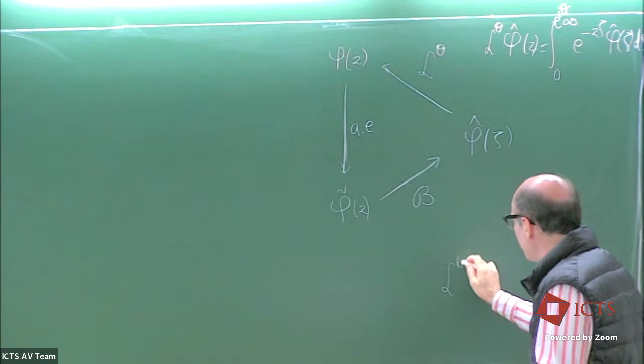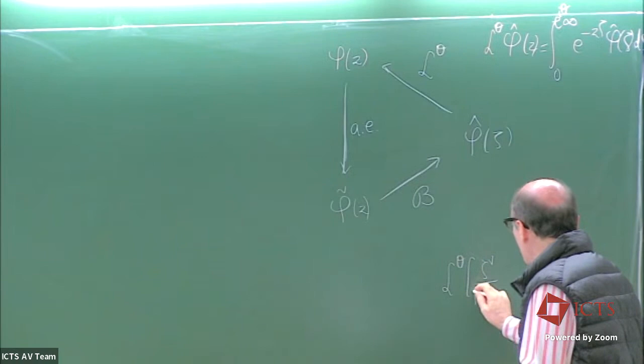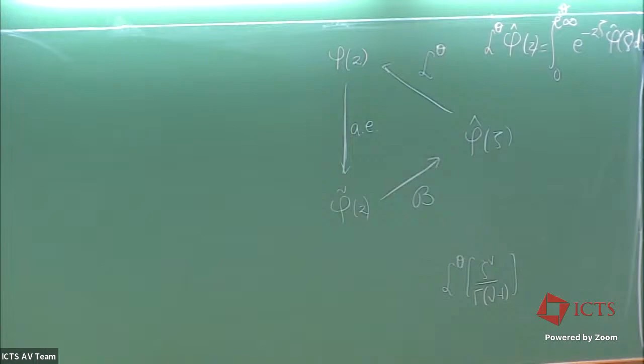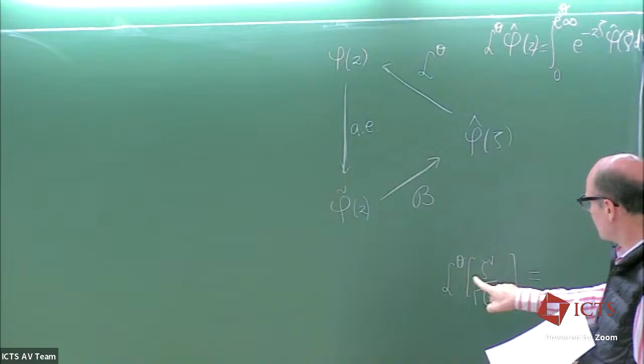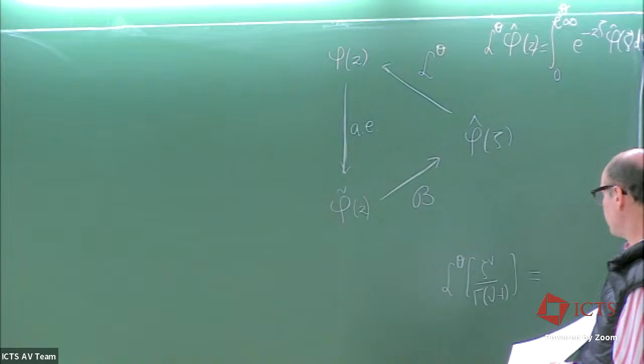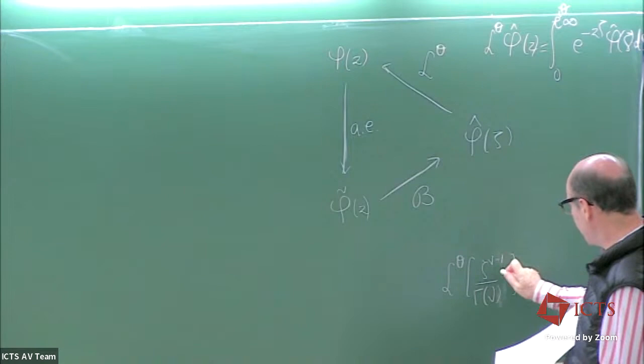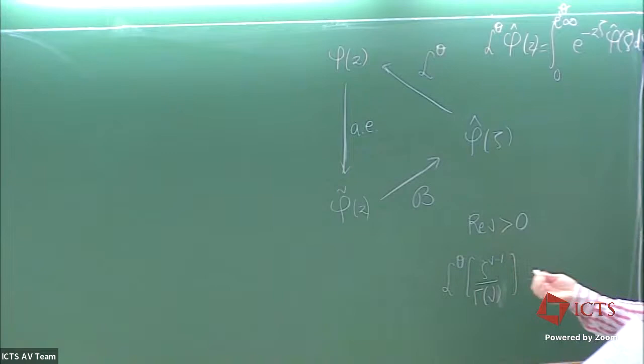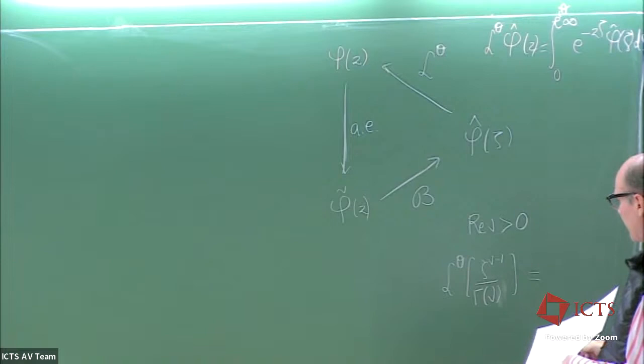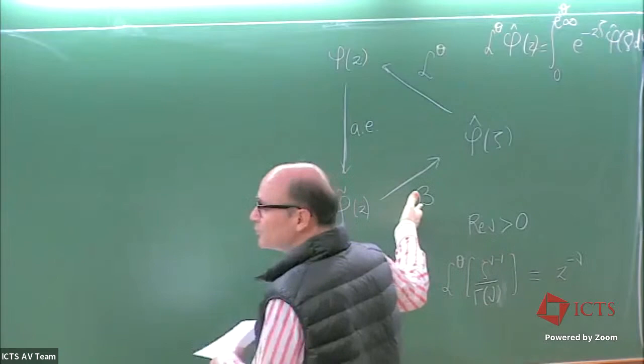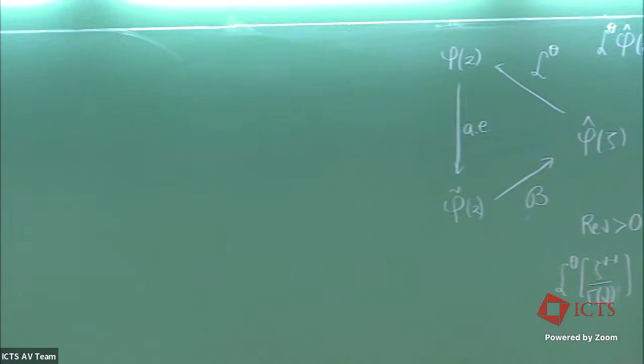Let me mention very clearly that a particular case is the case of monomials: zeta to the power nu, not necessarily integer. What you need about nu is just that you need your thing to be integrable at the origin. So it's rather gamma of nu, nu minus one here, and you need the real part of nu to be positive, so that the growth at the origin makes it integrable. And then the formula is this — this is our motivation to define the Borel transform like this.